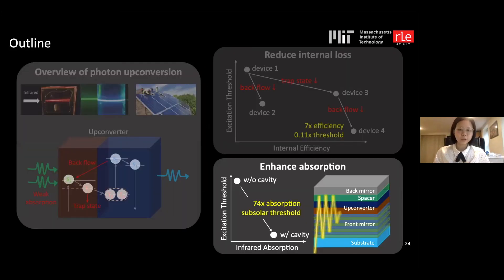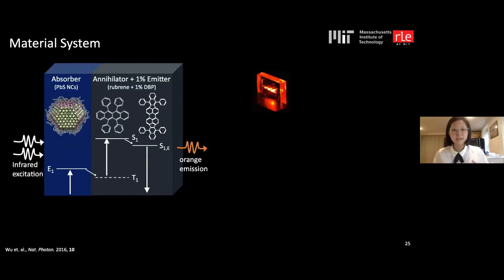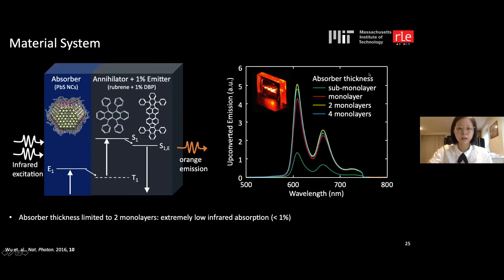All these strategies — introducing a blocker, diluting the absorber within a bilayer structure — are applicable to other upconversion systems such as infrared-to-red or any other wavelength combination, as long as it is a solid-state triplet exciton upconversion system. Now I'll address the external limitation of weak absorption.